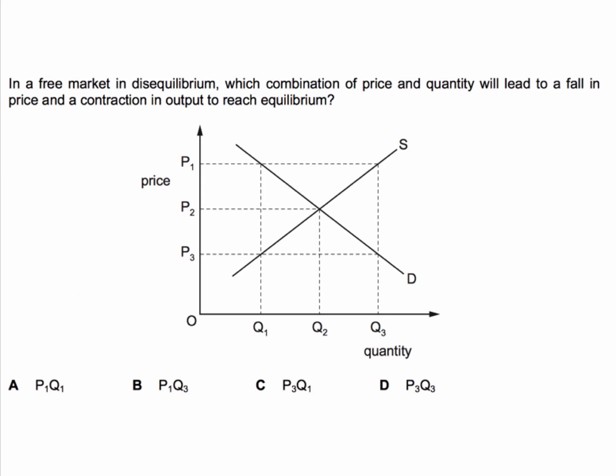We're looking here for a movement in price and quantity in output to reach the equilibrium. The equilibrium is at P2Q2. So we're looking for output to fall, presumably from Q3 to Q2, and price to fall from P1 to P2.